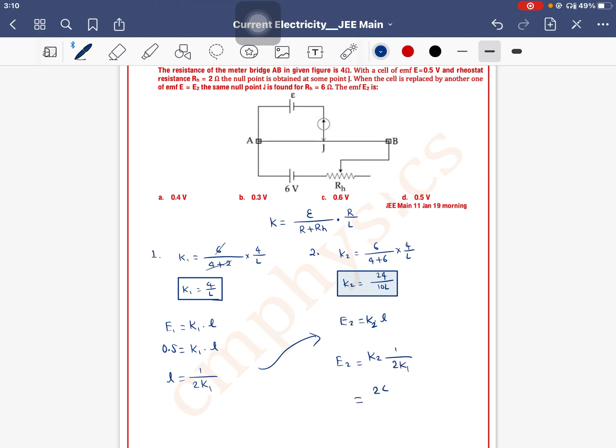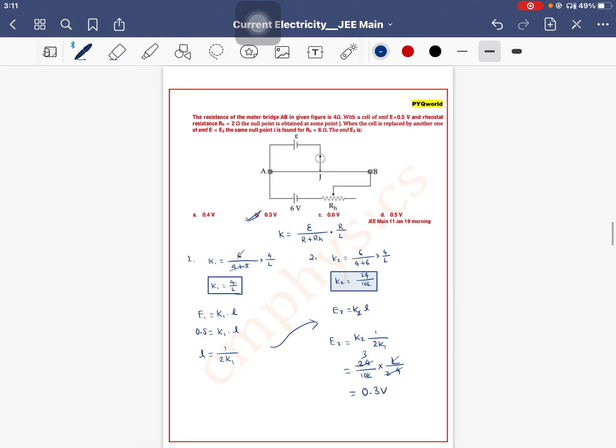So K2's value is 24 divided by 10 L into 1 by 2 K1 is 4 by L. L, L is gone. 2 into 4 is 8, 8 into 3 is 24. So this will come 3 by 10 is 0.3 volt. Option B is the correct one. Right?